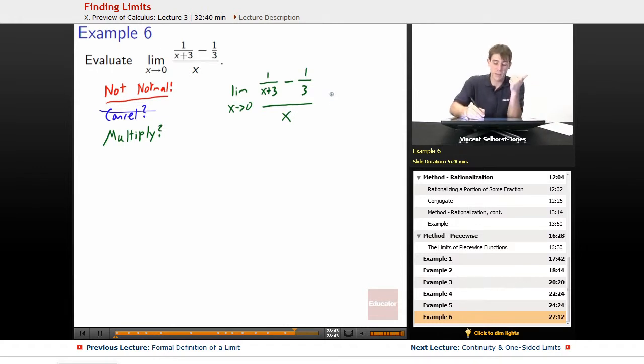Well, what would get rid of the x plus 3? x plus 3 would get rid of the denominator of x plus 3. What would get rid of 1 over 3? Multiplying by 3. So we can get rid of both of those denominators by multiplying that whole top by x plus 3 times 3.